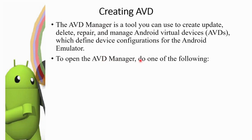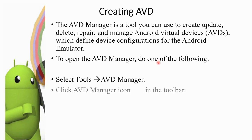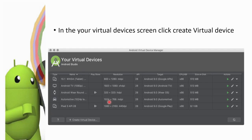To open the AVD Manager, do one of the following: select Tools > AVD Manager from the Android menu. If you have a toolbar, you can open the AVD Manager from there. The screen opens and you can manage virtual devices. If there is no device, we can create a new virtual device using the plus icon.